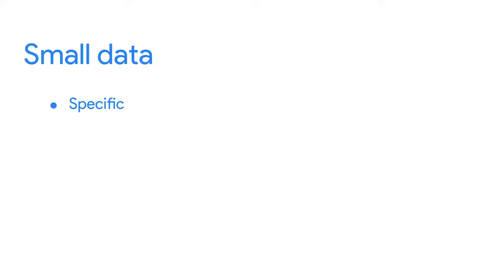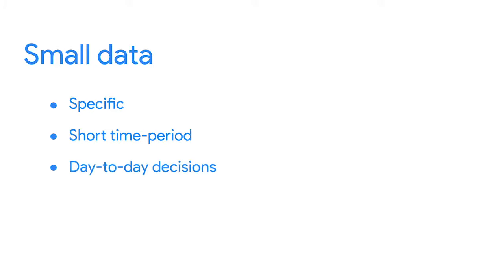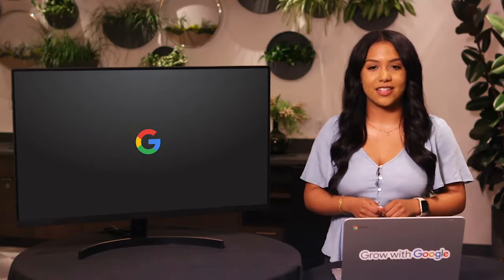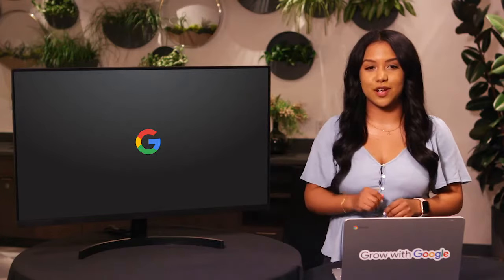One way you could decide which tool to use is by the size of your data set. When working with data, you'll find that there's big and small data. Small data tends to be made up of data sets concerned with specific metrics over a short, well-defined period of time — like how much water you drink in a day. Small data can be useful for making day-to-day decisions, but it doesn't have a huge impact on bigger frameworks like business operations. You might use spreadsheets to organize and analyze smaller data sets when you first start out.